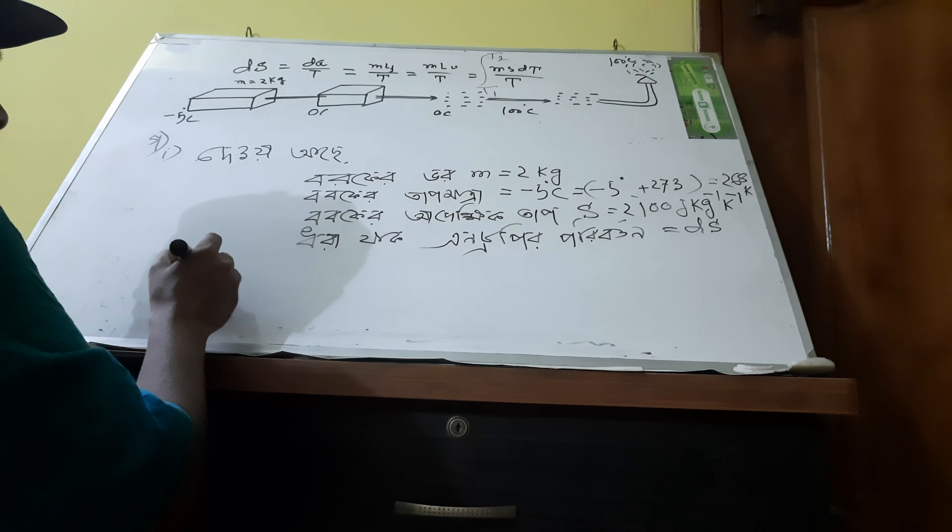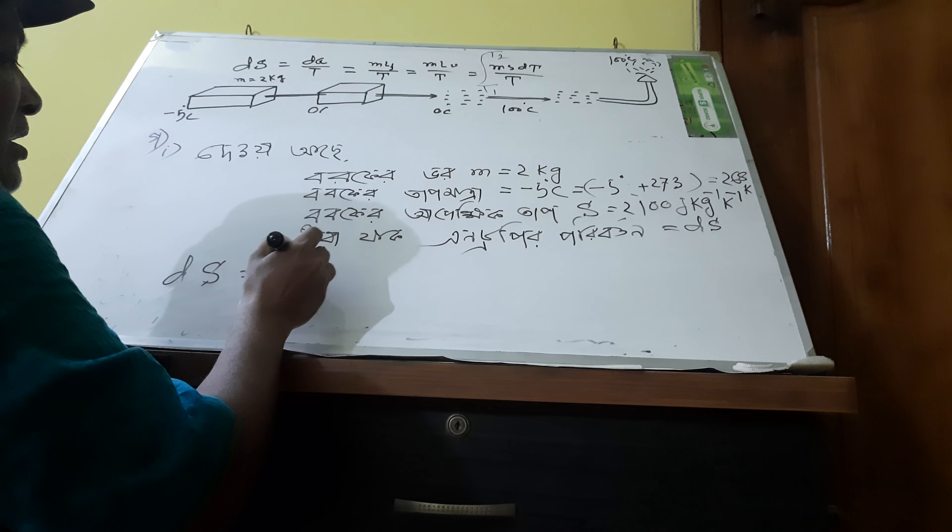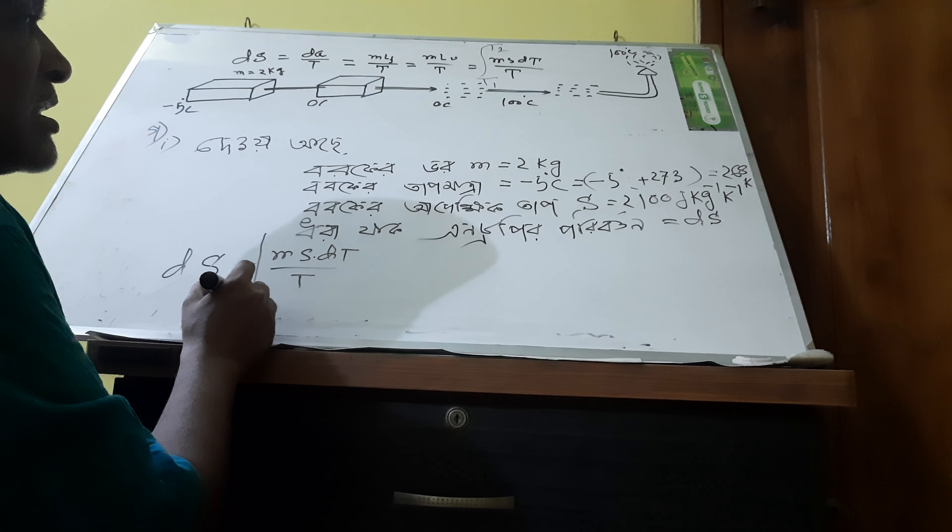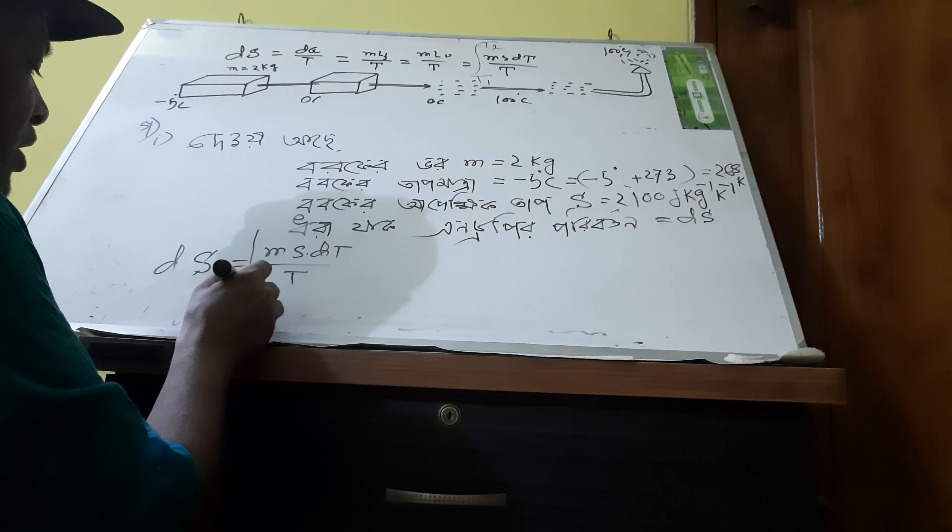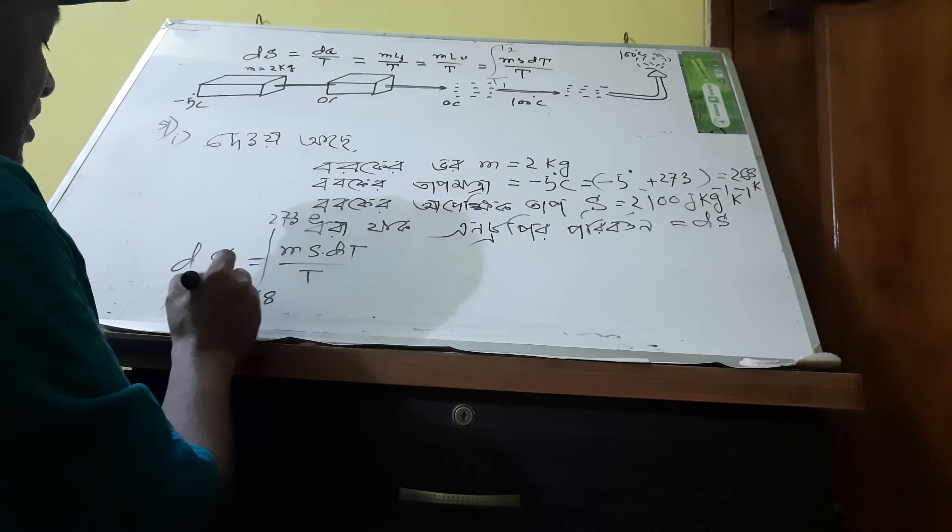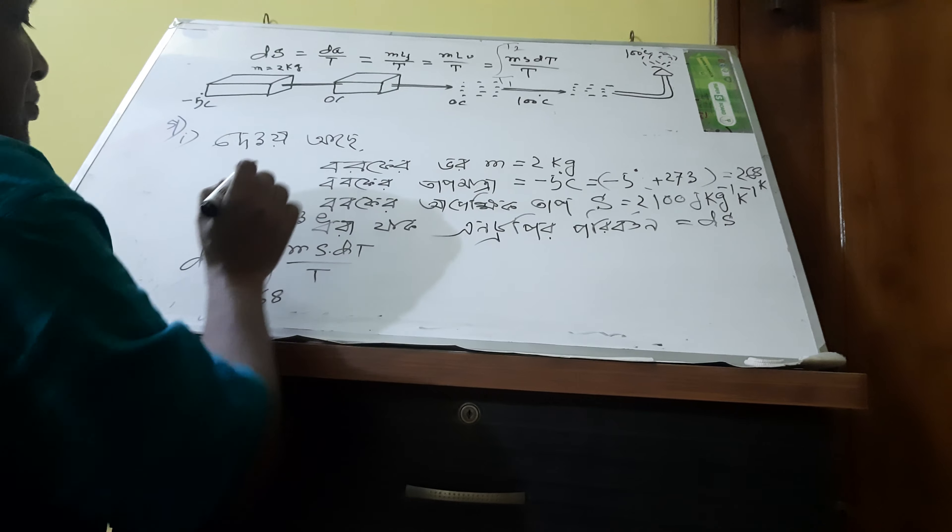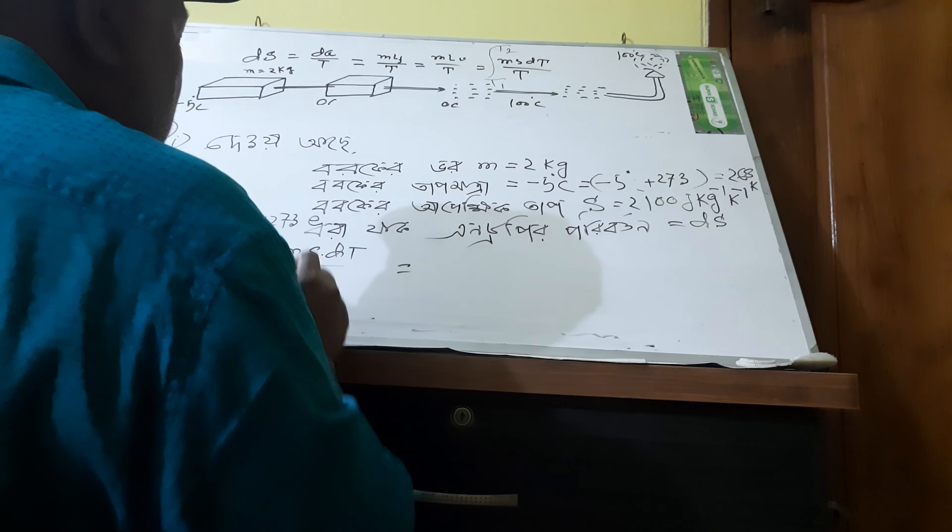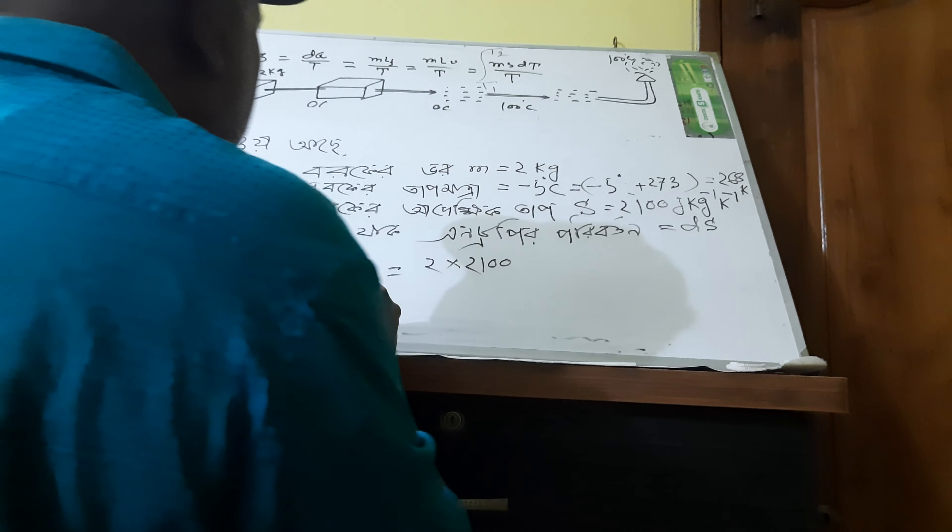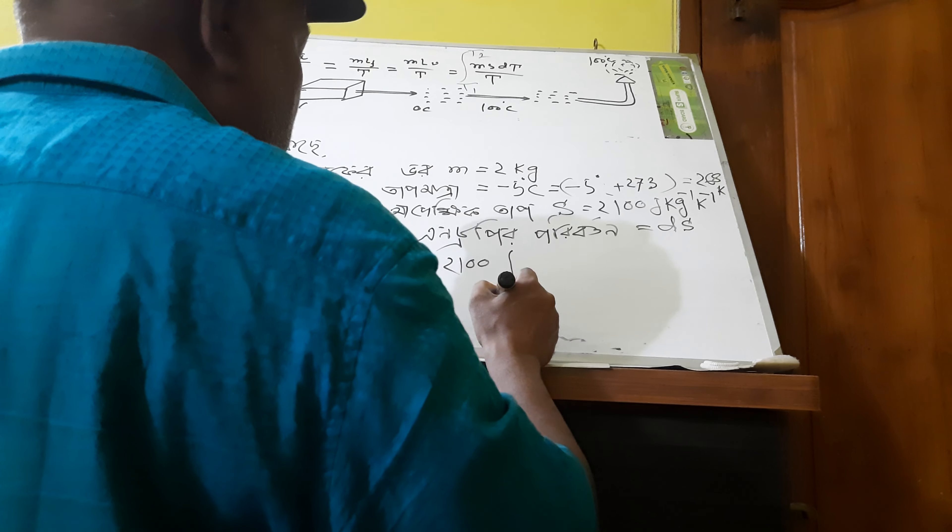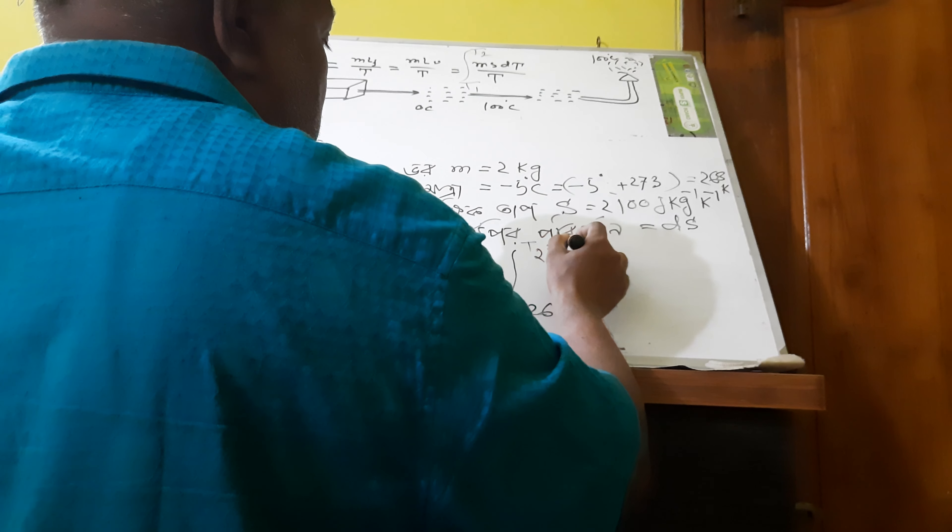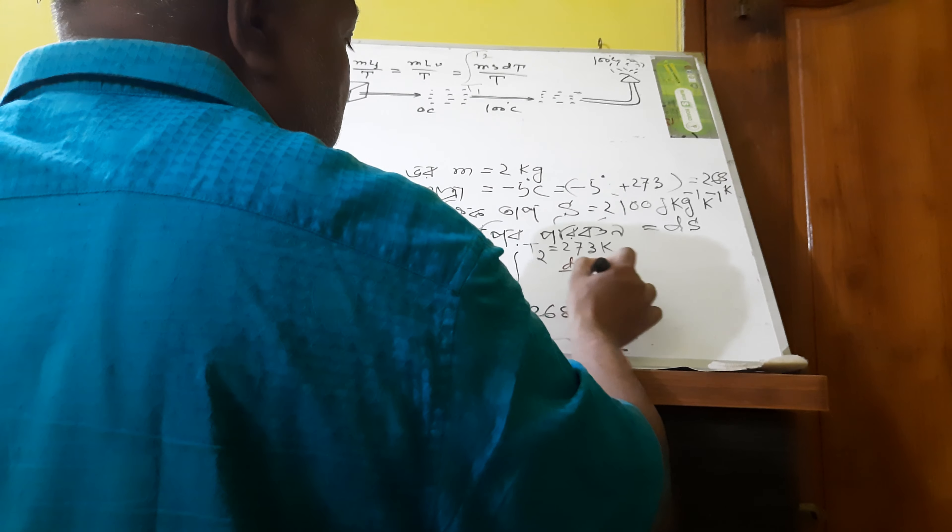Here we have to change D, M, S, DT divided by T. T is equal to minus 5 degree centigrade and T Kelvin is equal to 213. T2 is equal to Kelvin. It is equal to DT divided by DT.